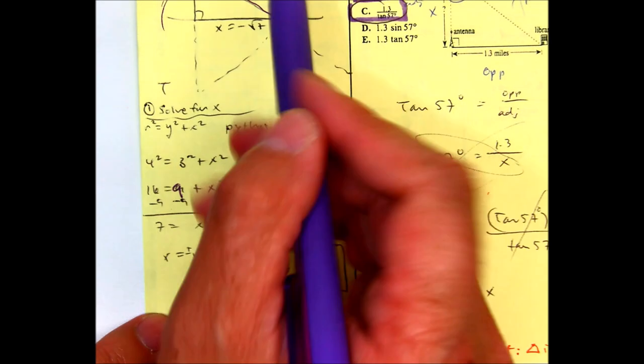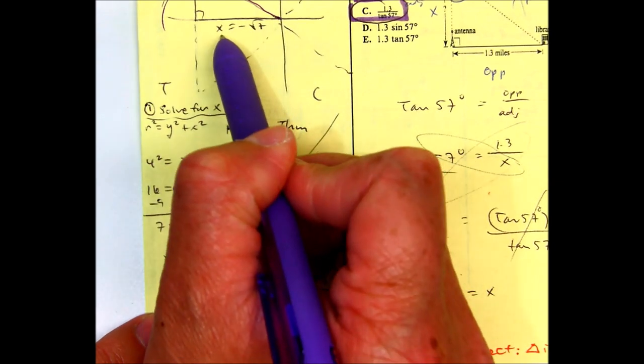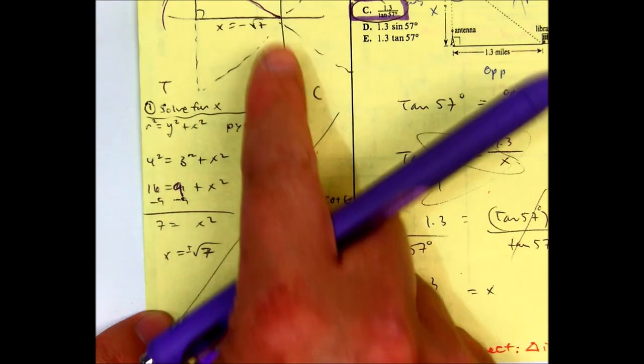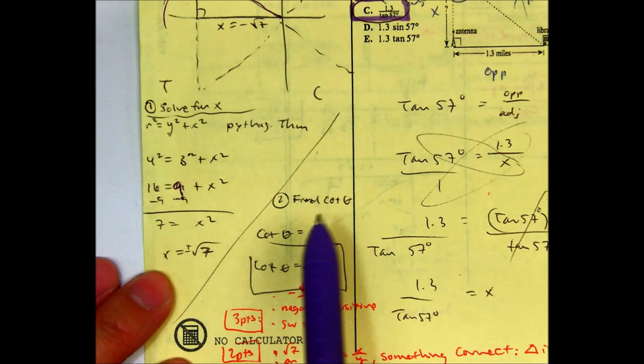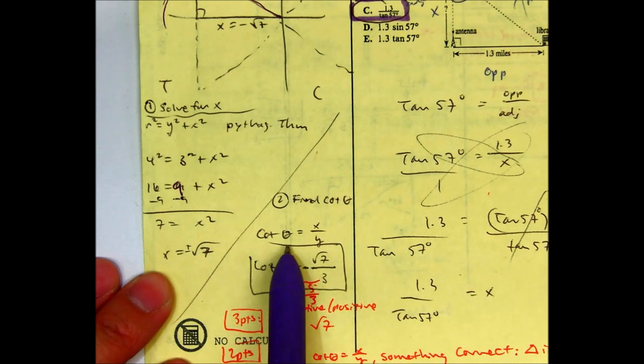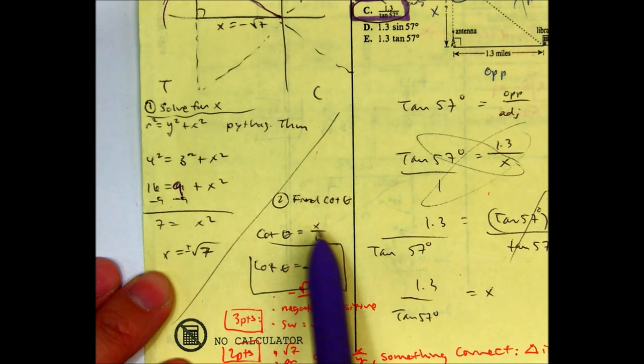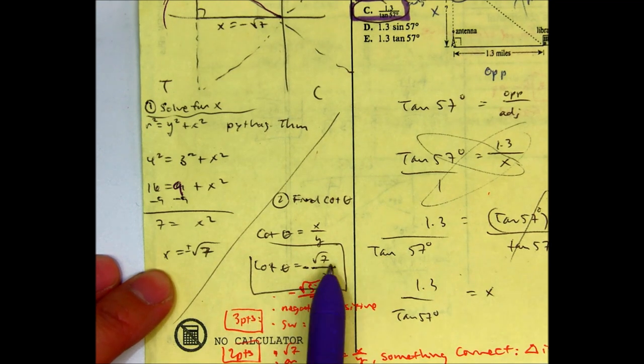Now, if you think about it, x is going left. So your answer is x is equal to negative radical 7. A common mistake was just putting positive here. To find cotangent, cotangent of theta is x over y. So your x value is going to be negative radical 7, and your y value is going to be 3. So your answer is cotangent of theta equals negative radical 7 over 3.